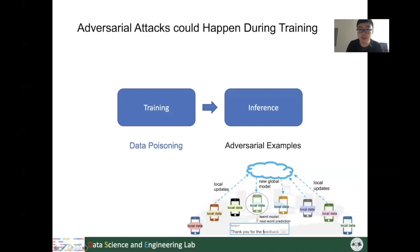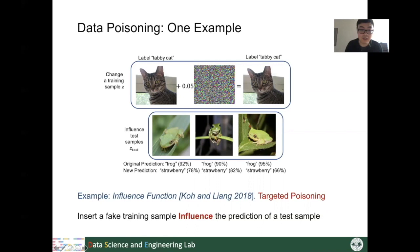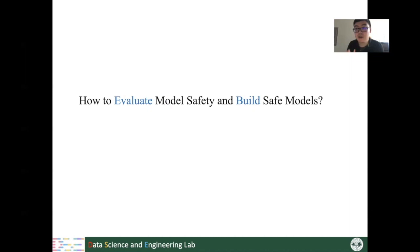One example from Stanford showed that by inserting one fake image into the training set, they are able to make the trained model mispredict a small set of targeted test samples. All these cases show that we should pay a lot of effort studying the safety issues of machine learning models — but how we can carefully evaluate our model's safety and how we can finally build safe models are not easily answered.